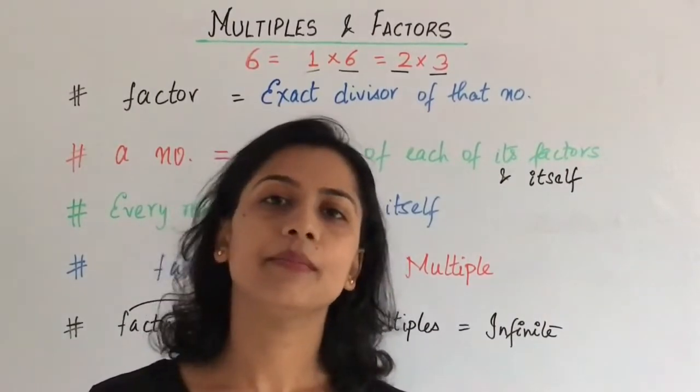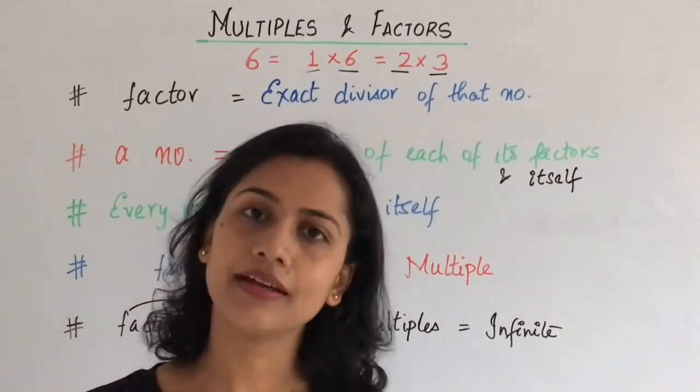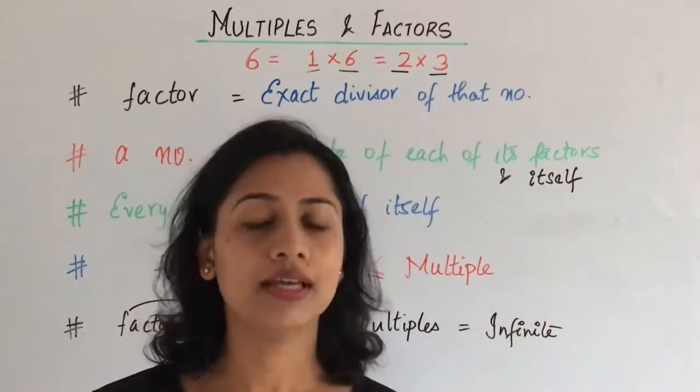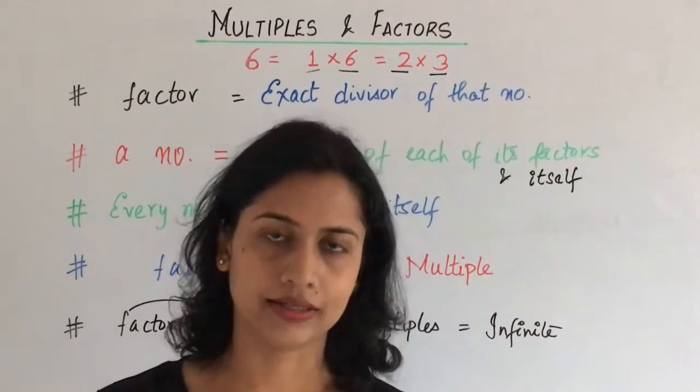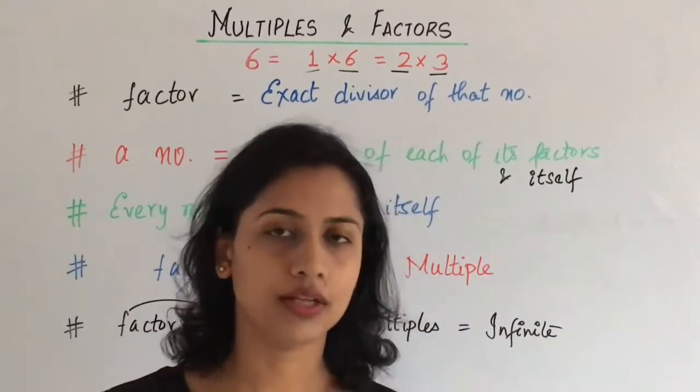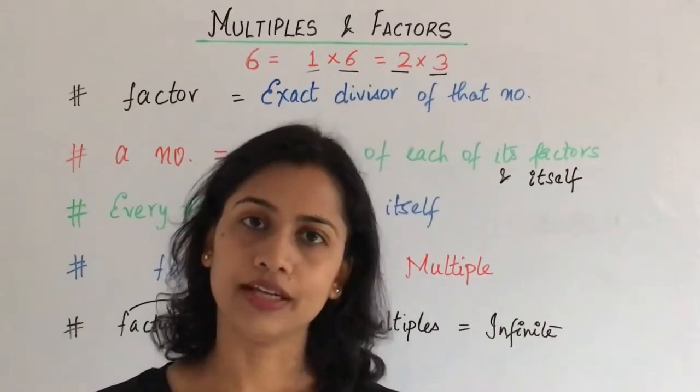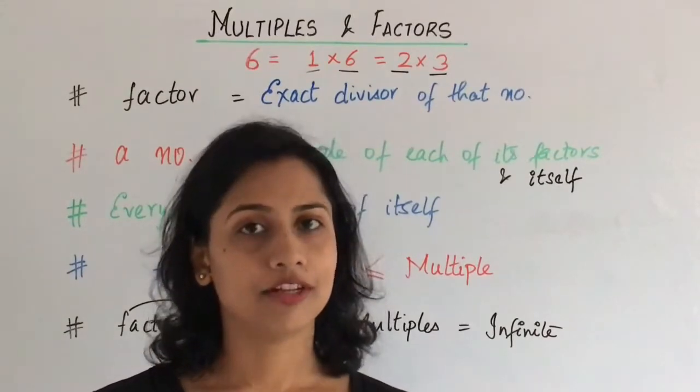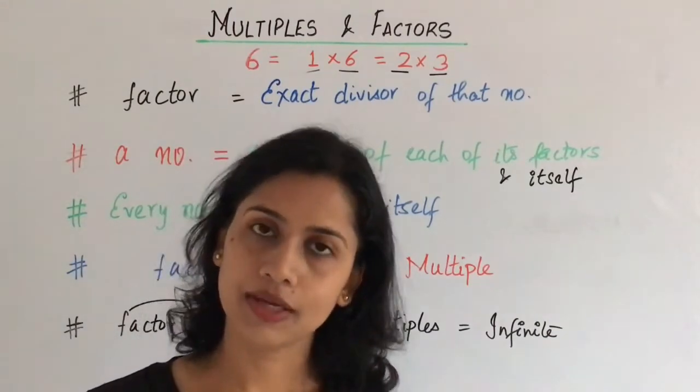Let us just summarize it once again. Factors are parts of any number that we multiply, so the result will be our number. And what are multiples? When we multiply a number by another number - suppose we are taking 5 into 1 is 5, 5 into 2 is 10. The multiples will be infinite, and the factors will always be finite.